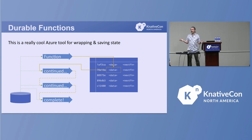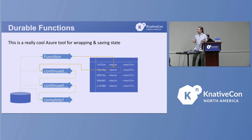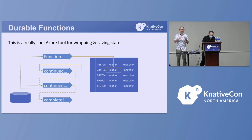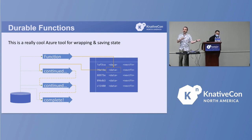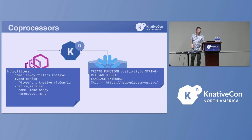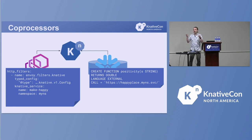Durable functions is another cool idea — something that lets you build continuations and save your state. You run a little bit of execution, then pause and return your state, and you can pick up later with all that state fed back into your application along with the next event. And then we talked about co-processors, where you automatically know your signature and all of that.